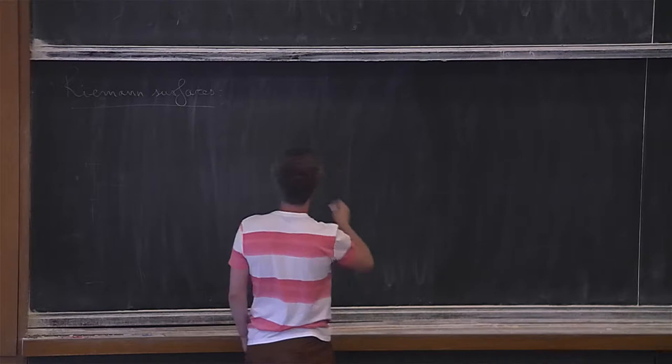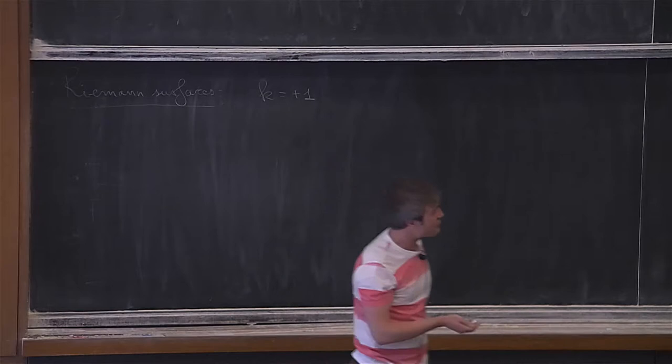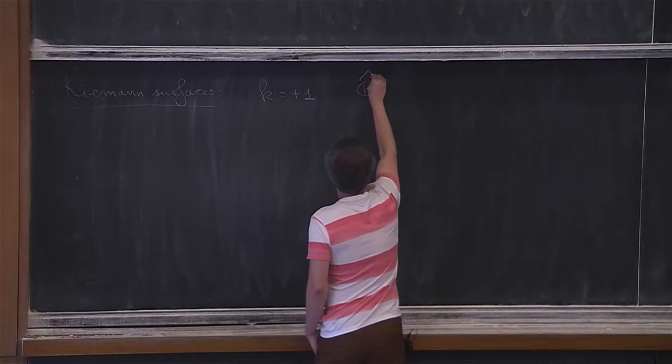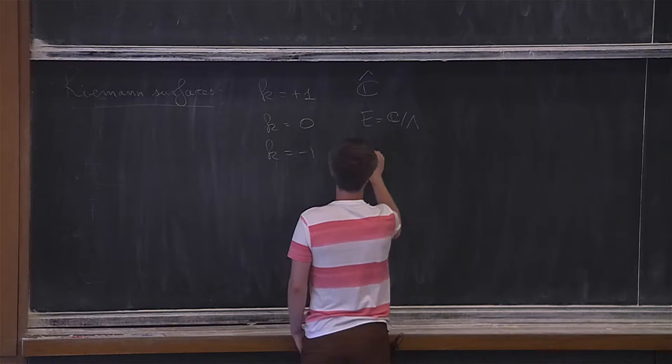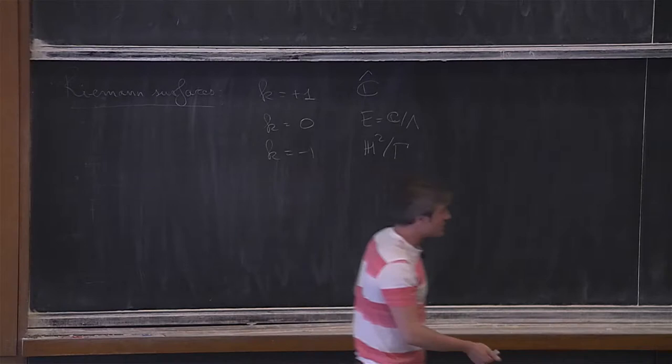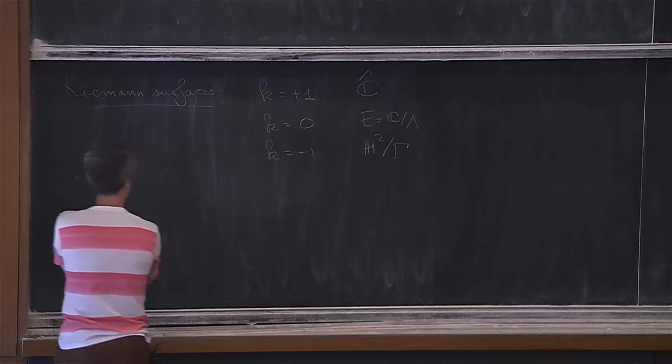To compare with the case of Riemann surfaces, there are three possibilities. When k equals plus 1, the only surface that works is the Riemann sphere. When k equals 0, you get elliptic curves. And when k equals minus 1, you get higher genus. You can ask the same kind of thing about K3 surfaces or any complex surface.